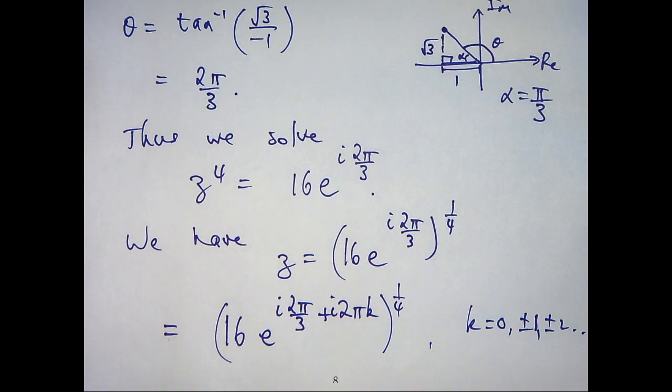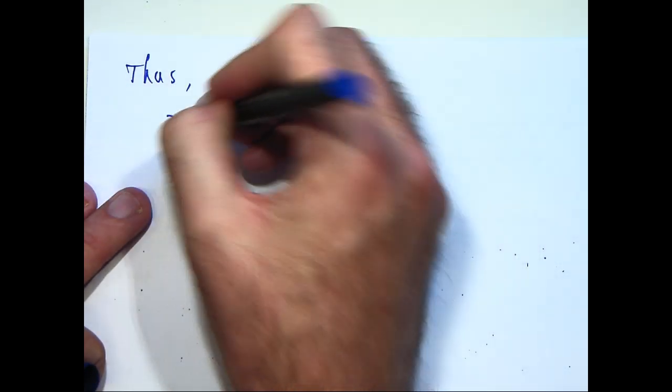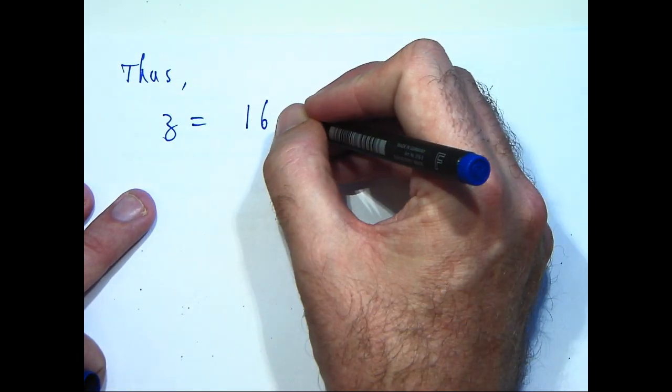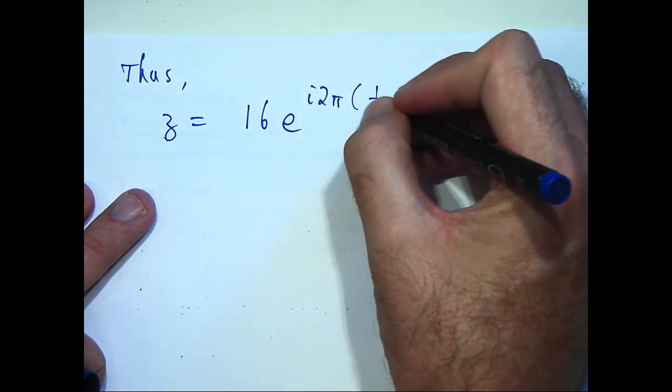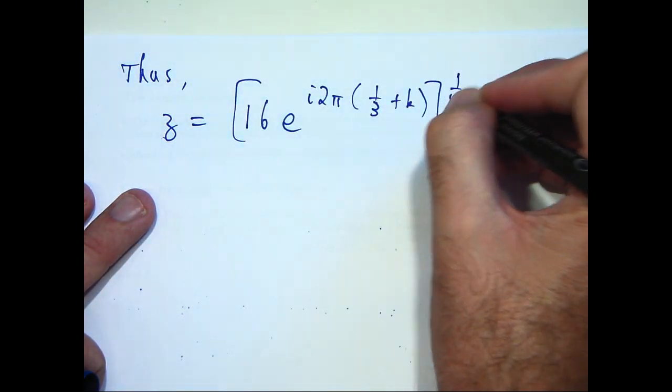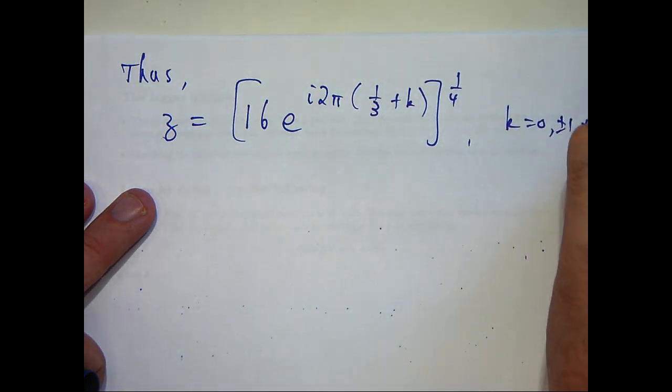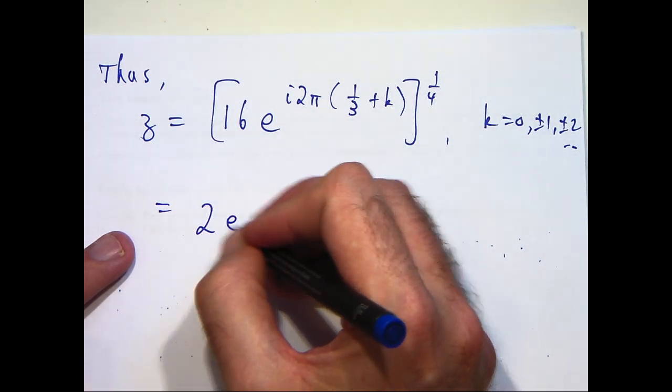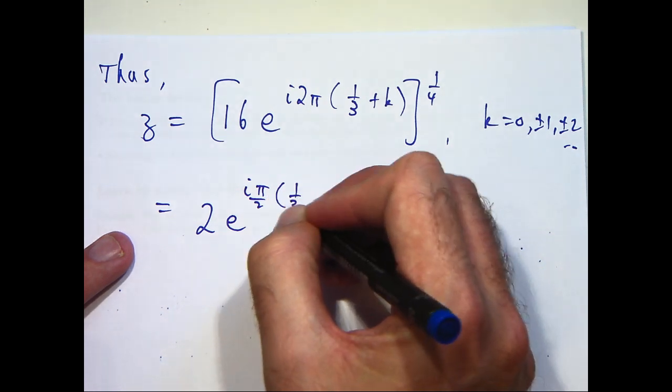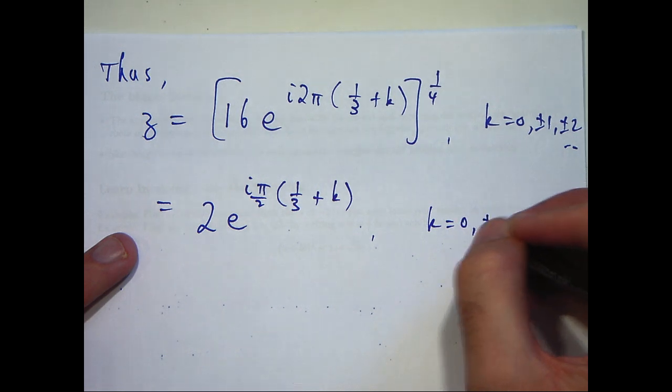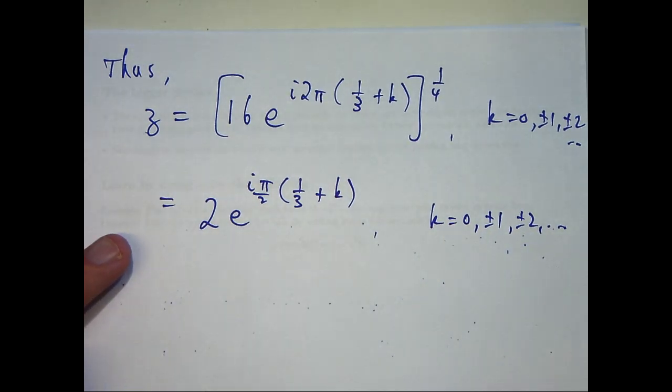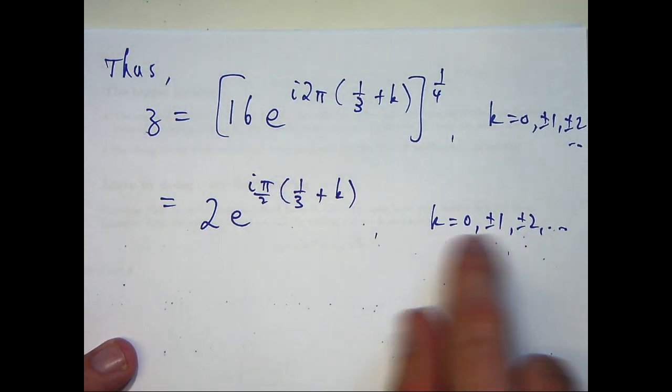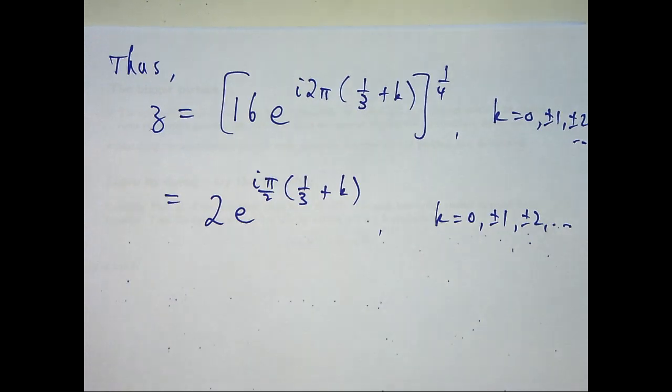Now what I'm going to do is simplify this and then expand as I normally would. So I should have something like this, and then let's bring that quarter in and simplify. Now we're in a position where we can substitute in various simple values for k and we will get different roots for our polynomial.